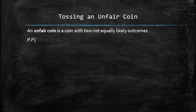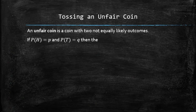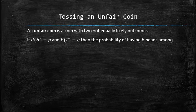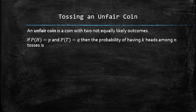In summary, if the probability of heads is p and the probability of tails is q, then the probability of having k heads among n tosses is given by the binomial probability formula: C(n, k) · p^k · q^(n−k).